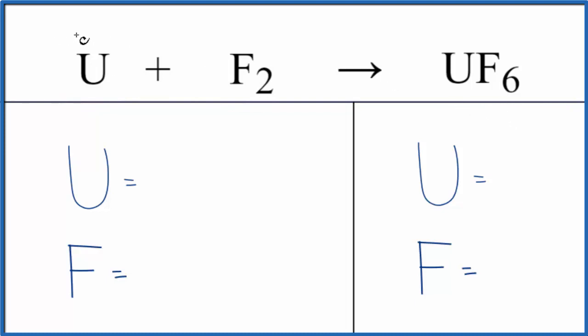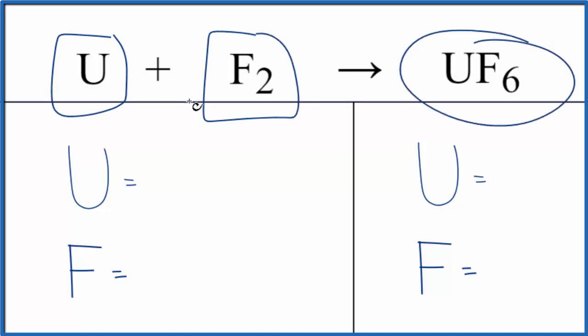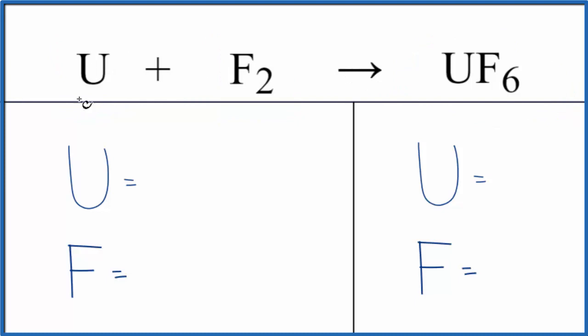In this reaction, the uranium is coming together with the fluorine gas to produce the UF6. So these two things combine to form one thing. This is a combination or synthesis reaction. You could also call it redox because the oxidation states are changing on the uranium and the fluorine.